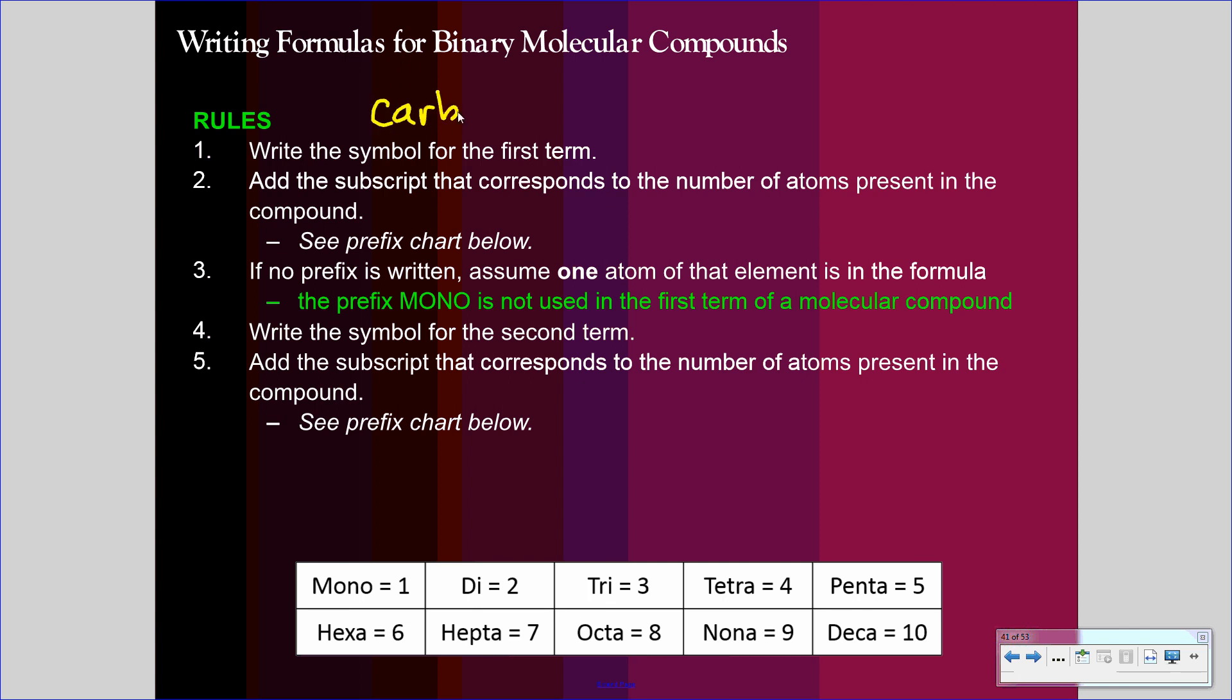So when we write the chemical formula for carbon dioxide, we're going to write the symbol for the first term, then add any subscript that corresponds to the number of atoms present. Simply, the word carbon implies there's only one there. So we don't need to put a one here because the C gives us our one. We would only put a number here if it was two or greater. And there's a prefix chart below. If there were two, we would say dicarbon, or three, tricarbon. You might say there's one, well I want you to use monocarbon. Well, the reason is the prefix mono is not used in the first term of a molecular or covalent compound. So we don't need to put monocarbon here, we'll say carbon.